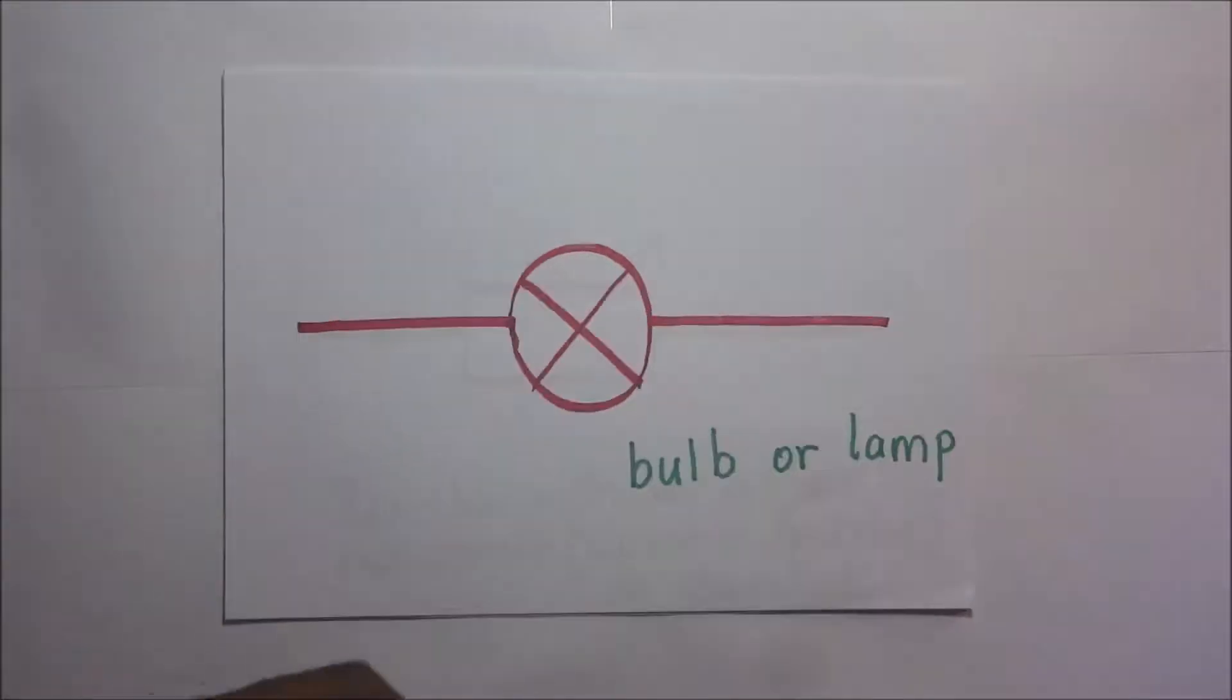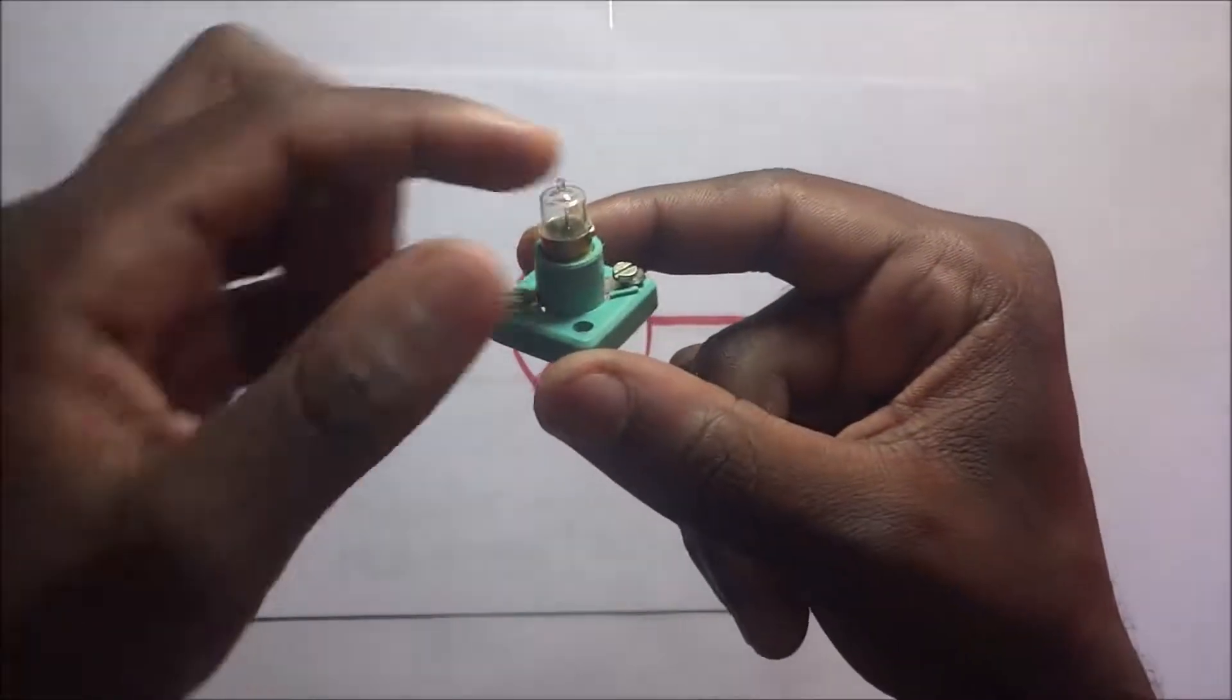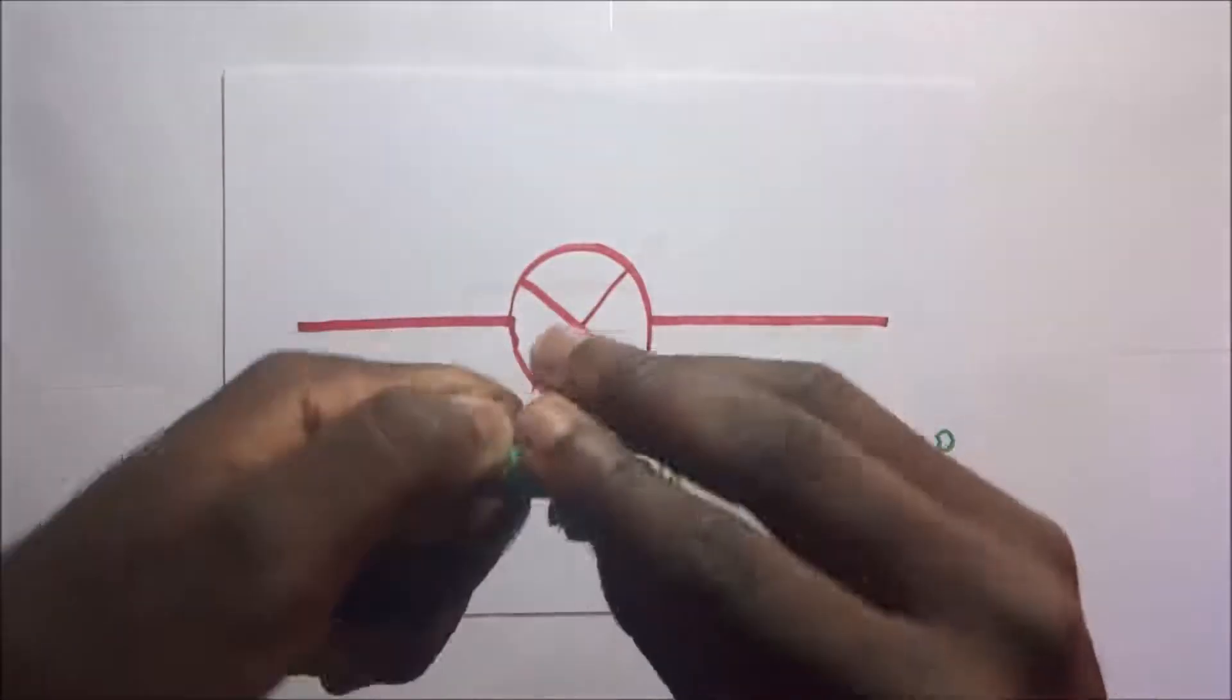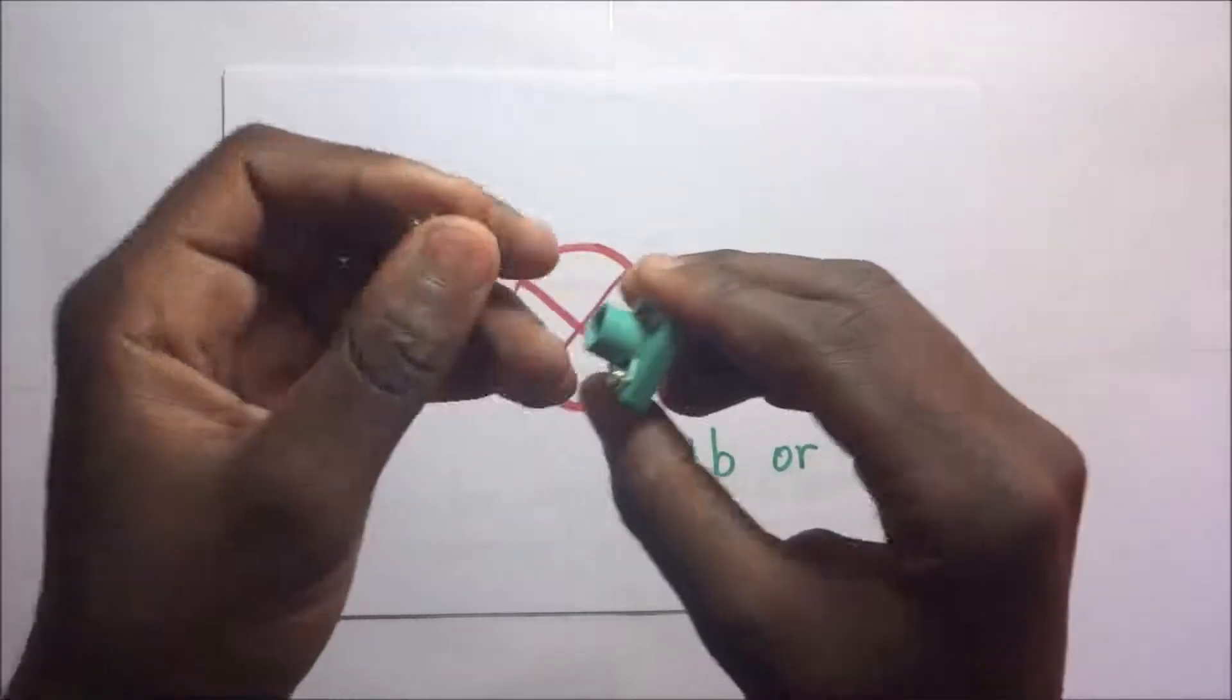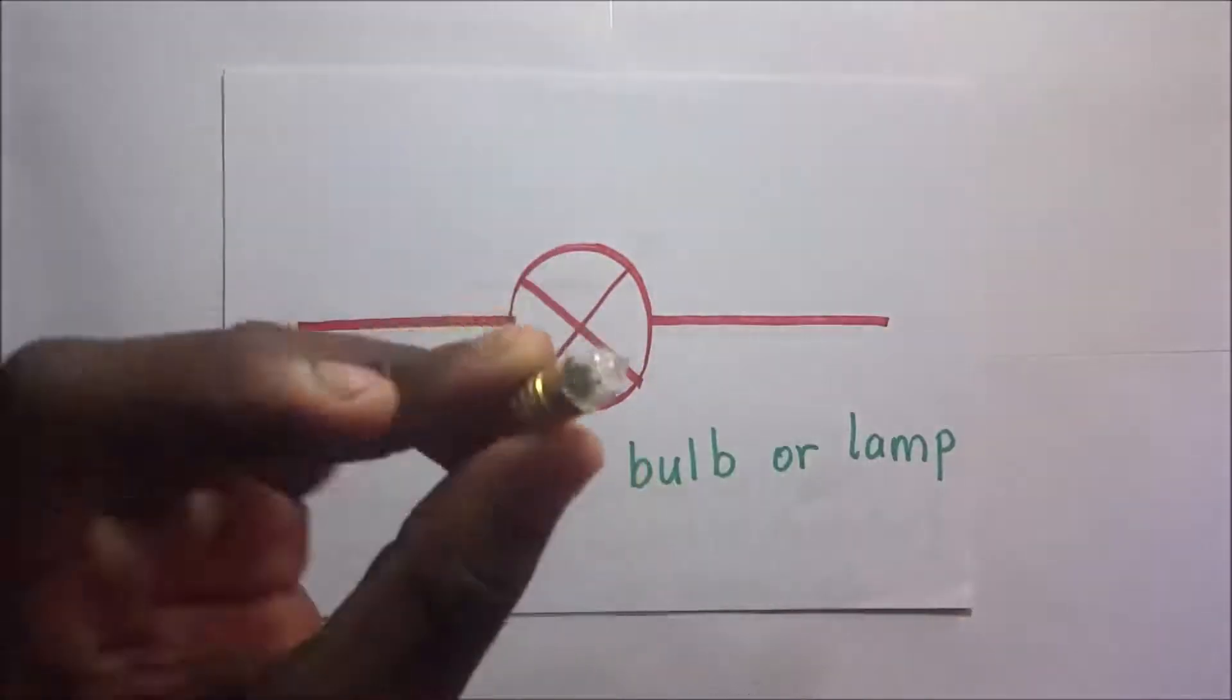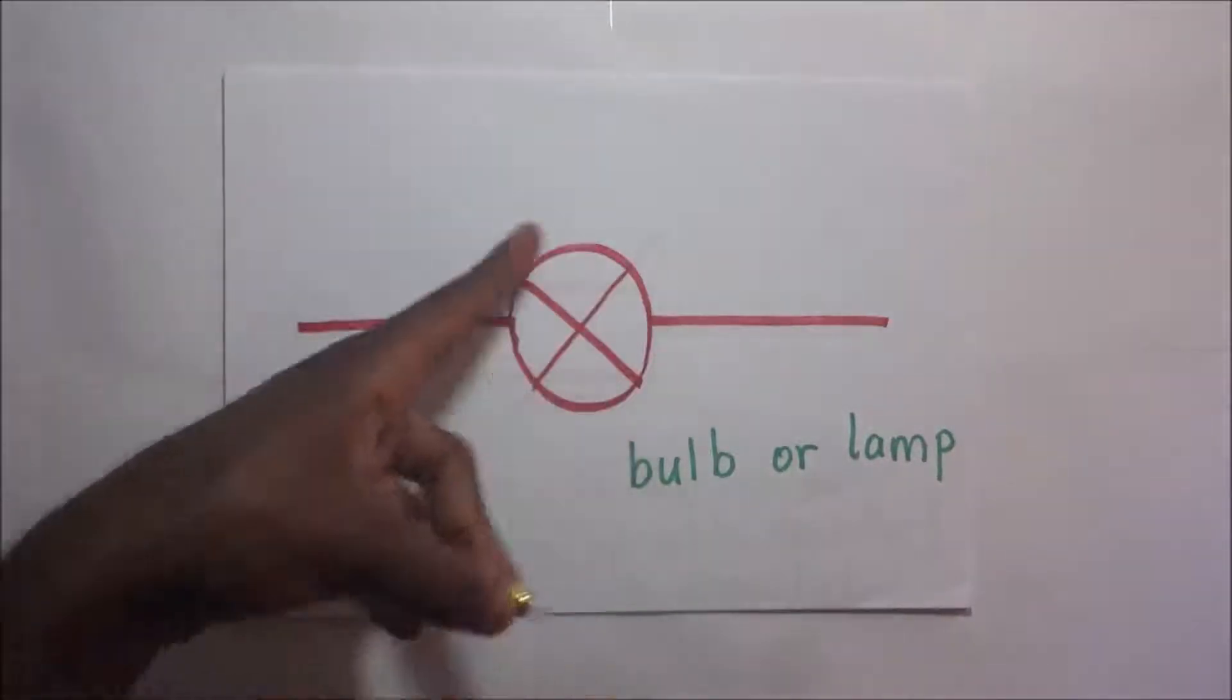Then we have the bulb. This right here is the bulb; it's in a bulb holder. If I may remove it, this is the bulb we're talking about and this is the holder. How do we represent this bulb? We simply draw that circle and cross it. Of course, these are wires connecting to other parts of the circuit.